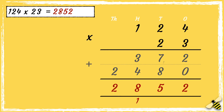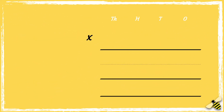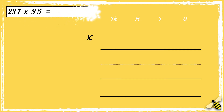Let's have a look at another example: 237 multiplied by 35. 237 has 2 hundreds, 3 tens, and 7 ones. 35 has 3 tens and 5 ones. So now that we're set up, we're ready to multiply.